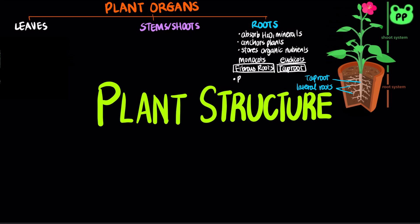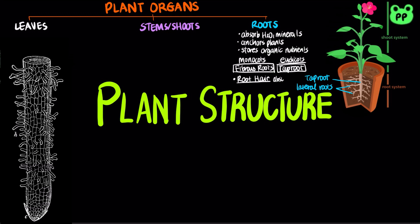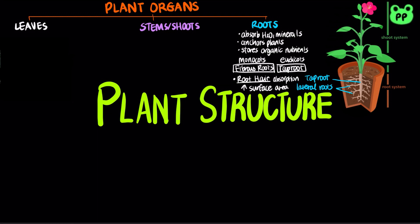In most plants, absorption of water and minerals occurs near the root hairs, where vast numbers of tiny root hairs increase the surface area.